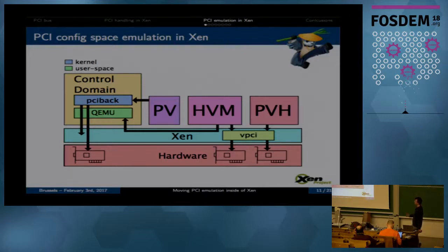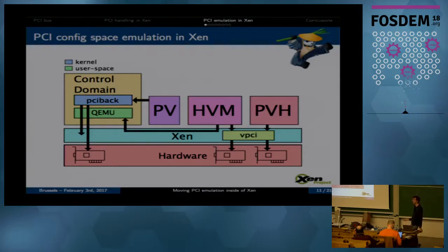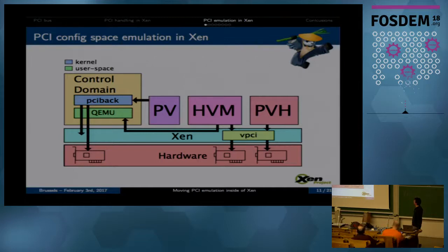For HVM it doesn't mean as much, because HVM already requires QEMU - so it's not that much of a win. Maybe a little bit, because if HVM doesn't have to access the real hardware for PCI configuration, you can run it inside a container or isolate it better, because it doesn't need to access the real hardware anymore. The main benefit is enabling PCI device pass-through for both HVM and PVH guests.